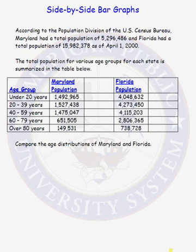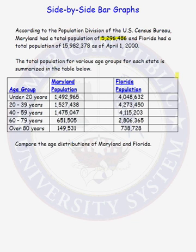In this problem, we will use side-by-side bar graphs to compare the distributions from two different populations. According to the Population Division of the U.S. Census Bureau, Maryland had a total population of 5,296,486 people, and Florida had a total population of 15,982,378 people as of April 1, 2000. The total population for various age groups for each state is given in the table below, and our job is to compare the age distributions of Maryland and Florida.